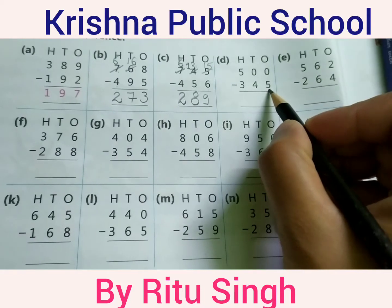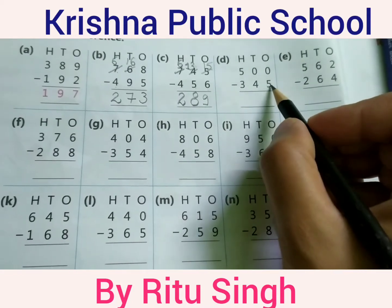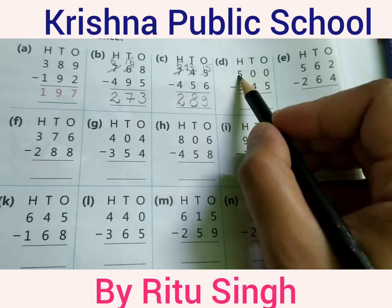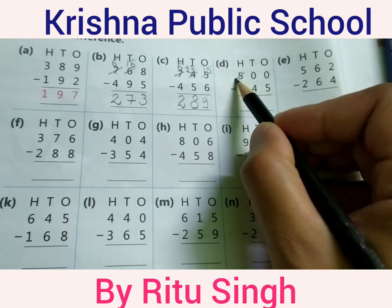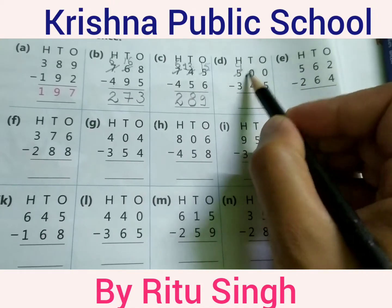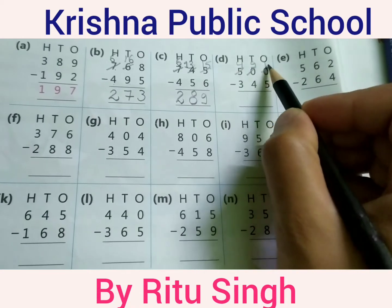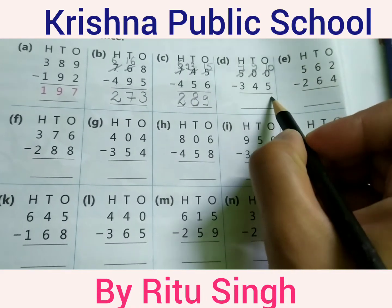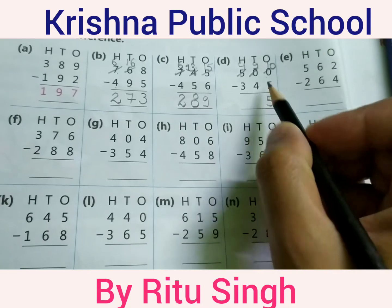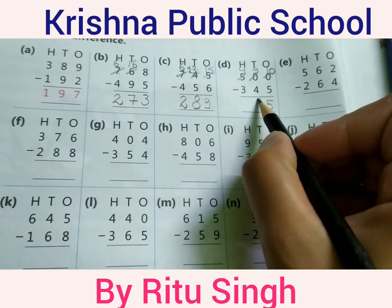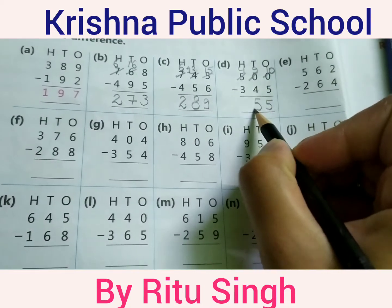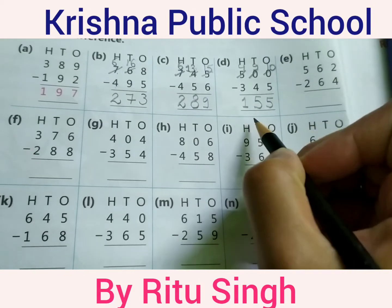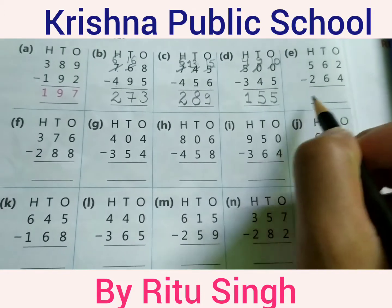0 minus 5 — 0 is a smaller digit compared to 5. Borrow directly from the hundreds position. That means from 5 digits: hundreds becomes 4, tens becomes 9, ones becomes 10. 10 minus 5 equals 5. 9 minus 4 equals 5. 4 minus 3 equals 1. Your answer is 155.